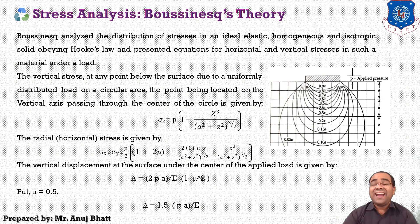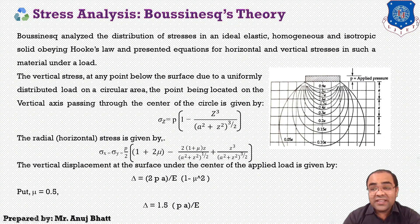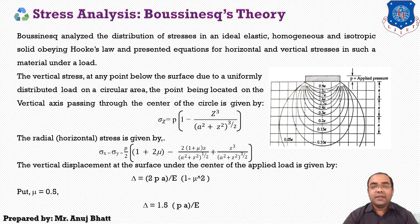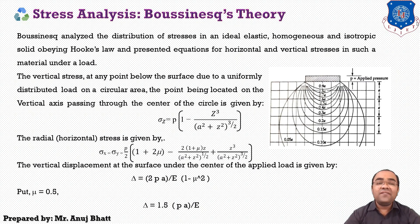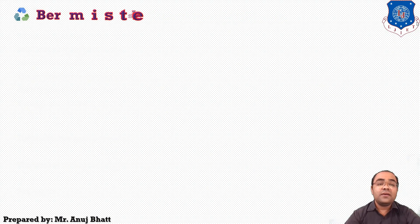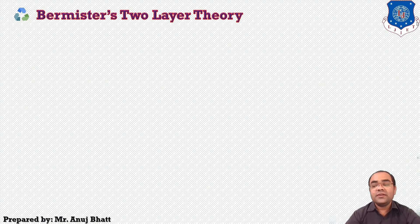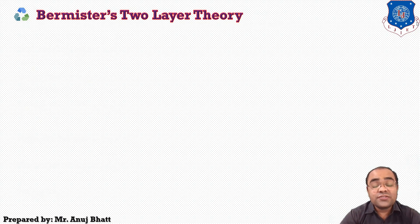Boussinesq based this theory on idealistic assumptions — he considered an ideal, homogeneous, isotropic, elastic solid material obeying Hooke's law, and on those materials he derived this theory. After this, the next topic is Burmister's theory, which gives the values for analyzing stress layer by layer in the pavement structure.